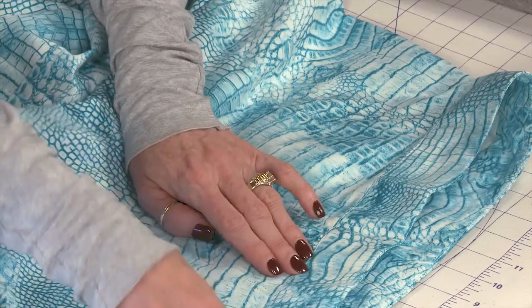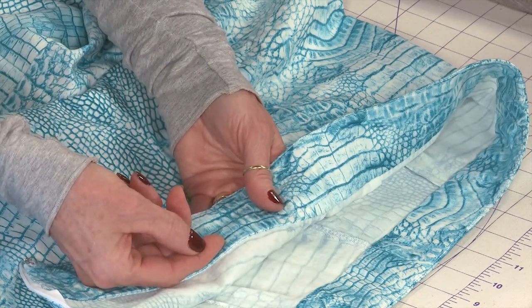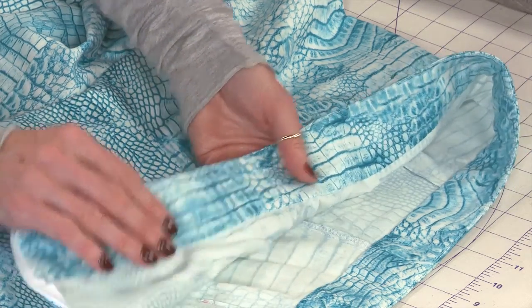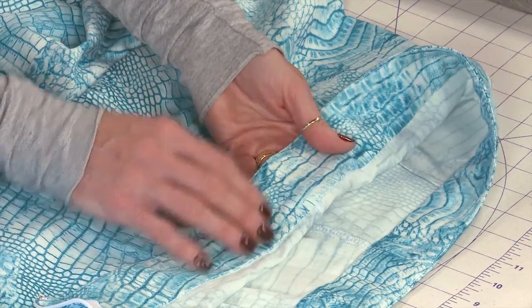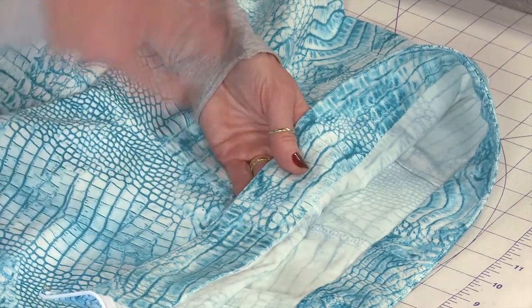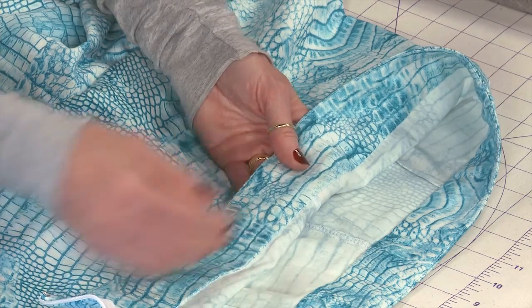So once I stitched that down, now I could have folded the seam or the facing back and I could have stitched this all down at one time, but just me being a little bit persnickety, I didn't want my stitching on the inside to be a little crooked, so I prefer just to stitch it down by hand.